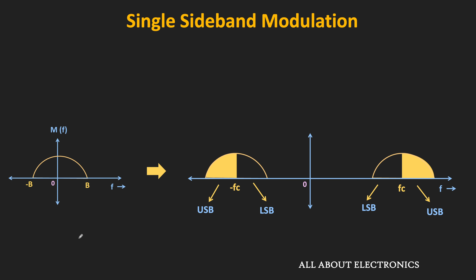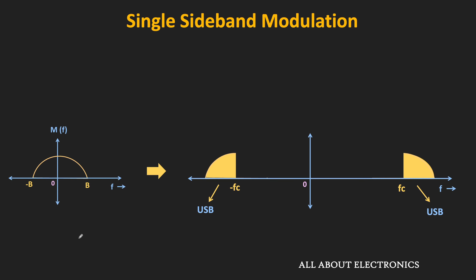But in single sideband modulation, only one sideband — either the lower sideband or the upper sideband — is transmitted. Because if we look at the frequency spectrum, both upper and lower sidebands contain the same information. That means even if we suppress any one of the two sidebands, it is still possible to recover the message signal at the receiver end.